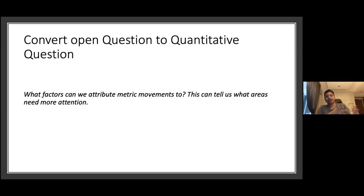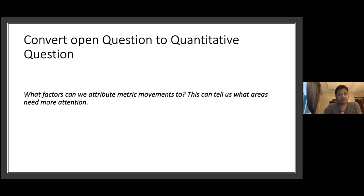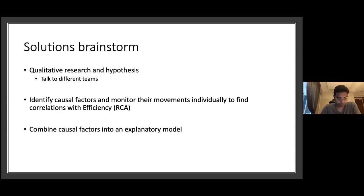The open-ended question here is: how do we understand what caused efficiency to regress? There was a dip and we want to understand why. I'm going to focus on how to get a quantitative solution. What I did was convert this open-ended question into: what factors can we attribute our metric movements to? This can tell us what areas need more attention. There are multiple ways to convert this question, but this is one of them.